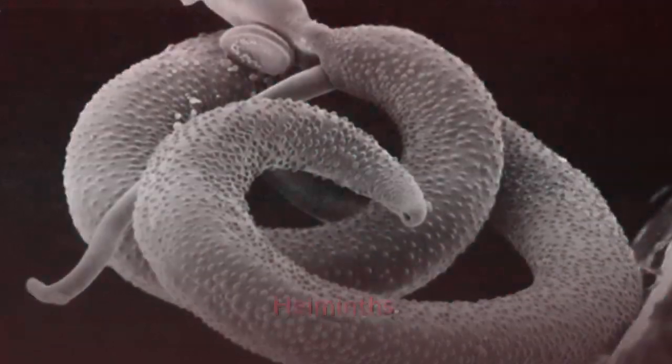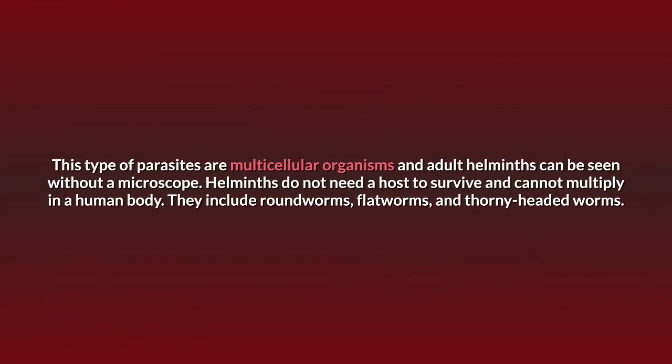The second type is helminths. Helminths are multicellular organisms, and adult helminths can be seen without a microscope. Helminths do not need a host to survive and cannot multiply in a human body. They include roundworms, flatworms, and thorny-headed worms.